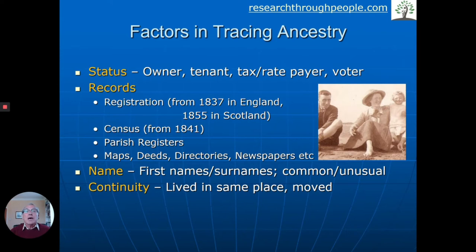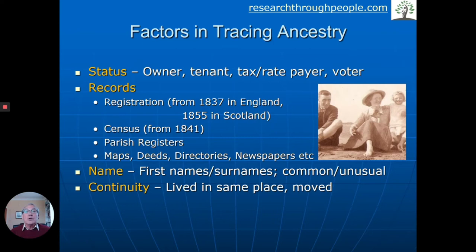In terms of status, what we're looking at is someone who lived in that house and either they were an owner or a tenant. Records go with that — because you live in a house, you may pay land tax, council rates and so on. You may be a voter, so there may be an electoral roll, a record being kept of that person linked to the particular house. The normal records of registration and census may also play a part.